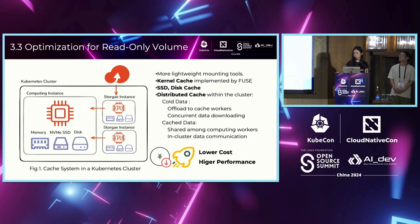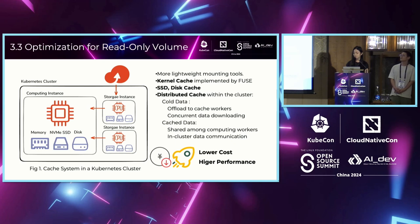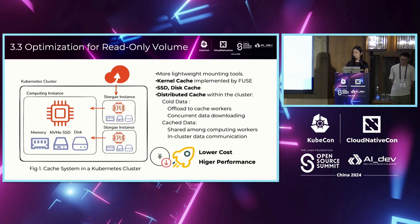When limited to read-only scenarios, several optimizations can be done. First, select a more lightweight mounting tool — if you are using S3, you can choose MountPoint S3 instead of S3FS; if you are using OSS, you can turn on the direct read mode of OSSFS for better reading performance. Second, use cache to exchange space for time. Compared with expensive GPUs, cache on disk or even in memory is relatively cheap. These solutions are suitable for repeated computing on the same node, but for distributed computing — which is more common — each node needs to keep copies of the data, and pulling data also occupies network I/O, which may affect business performance.